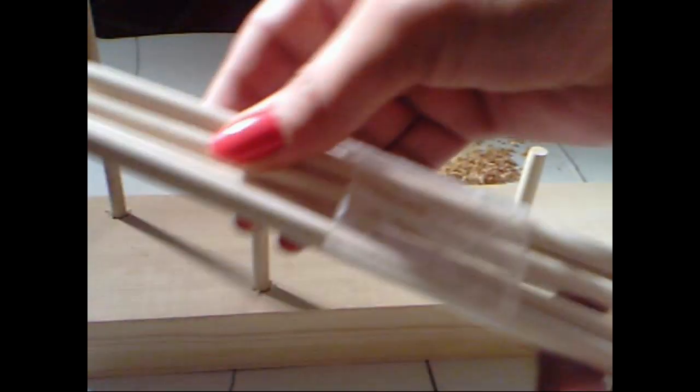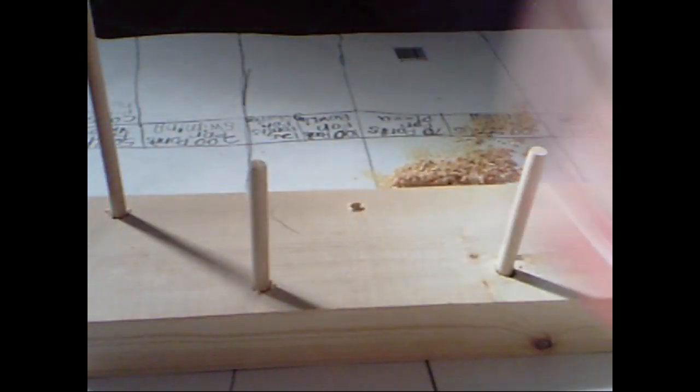Another thing you'll need is these wooden dowels. I got these at Michael's on the clearance rack for like 25 cents. It came with a pack of one, two, three, four, six, seven, eight, about eight, nine of these, right?